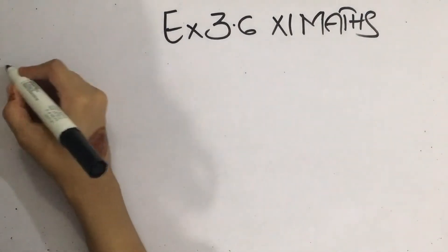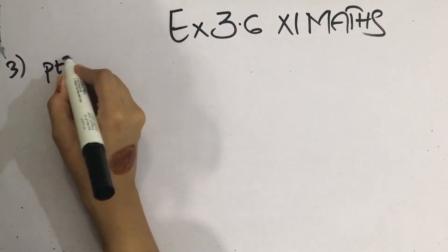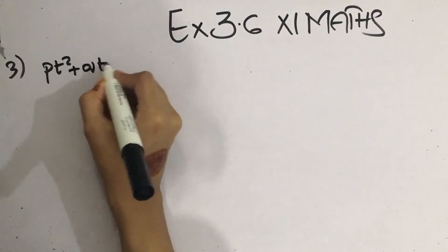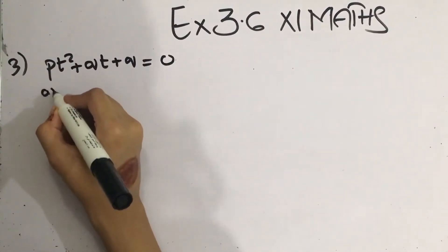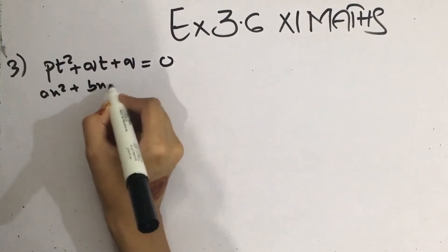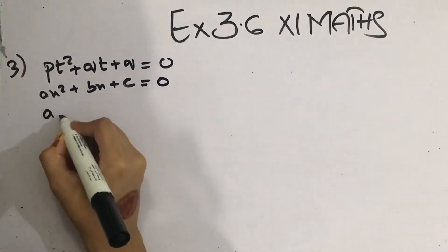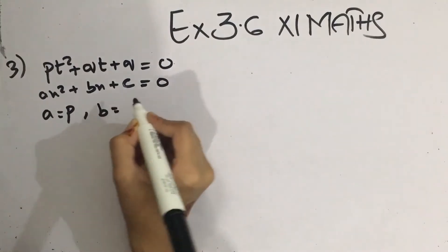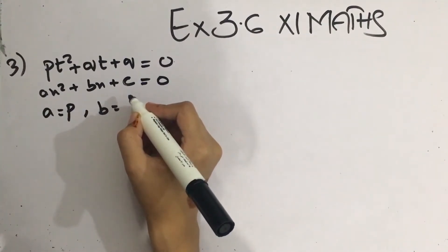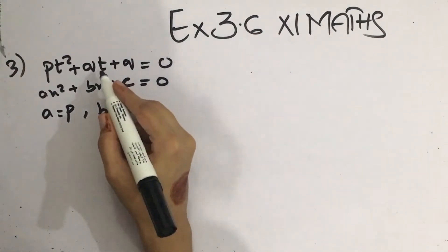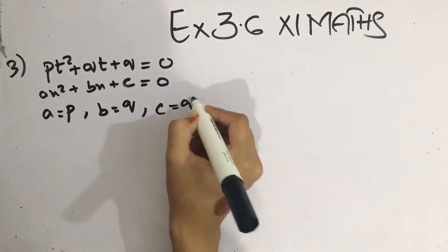The equation given for question number 3 is: p·t² + q·t + q = 0. If I compare this equation with the general form a·x² + b·x + c = 0, then on comparison we have: a is equal to p, b is equal to q, and c is equal to q.